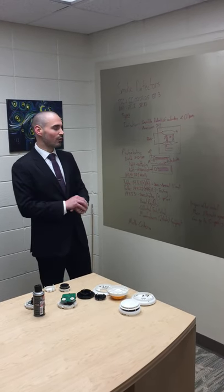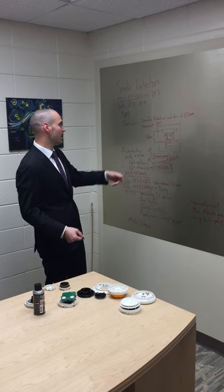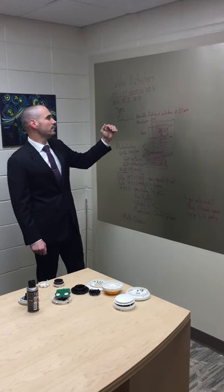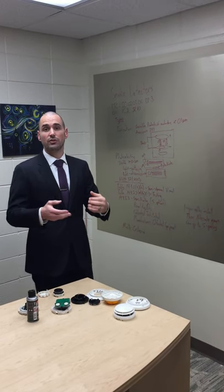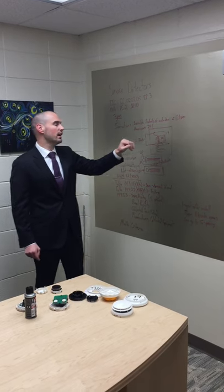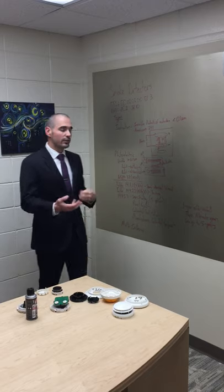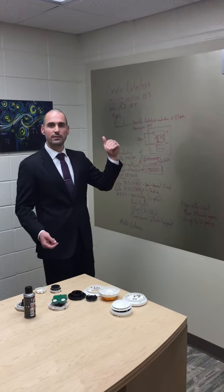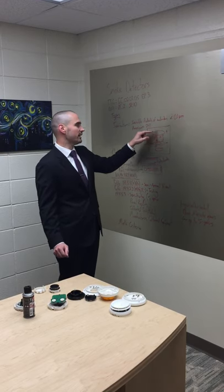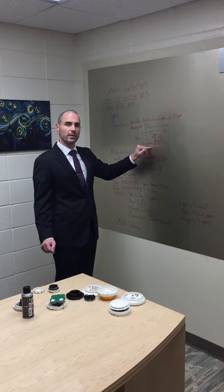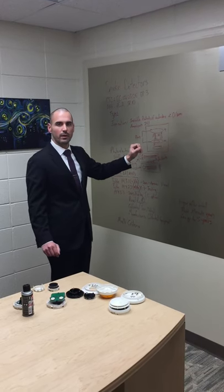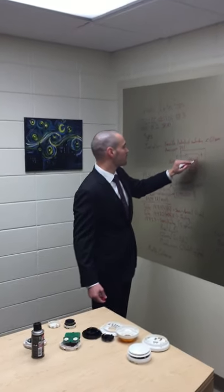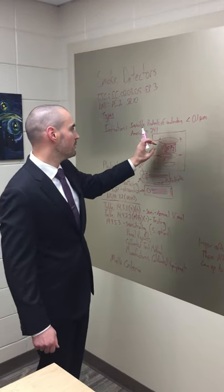We used our artistic ability to draw how these things work — feel free to judge in the comments. Ionization detectors pick up smaller particles less than 0.1 micrometers in size — invisible products of combustion. They use a radioactive isotope, Americium-241, with positive and negative charge plates. The alpha particles from Americium-241 cause an ion exchange between these charged plates. When smoke enters, it disrupts this ion flow.